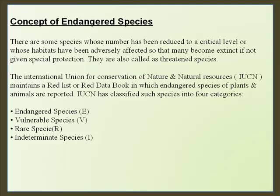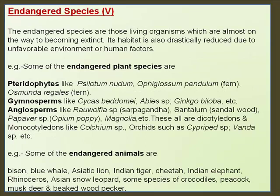Endangered species are those whose numbers have been reduced to a critical level or whose habitats have been adversely affected, such that they may become extinct if not given special protection. They are also called threatened species. The IUCN maintains a Red List or Red Data Book in which endangered species of plants and animals are reported. Examples of endangered plants include pteridophytes such as Psilotum nudum, Ophioglossum pendulum fern, Osmunda regalis fern, and gymnosperms like Cycas.